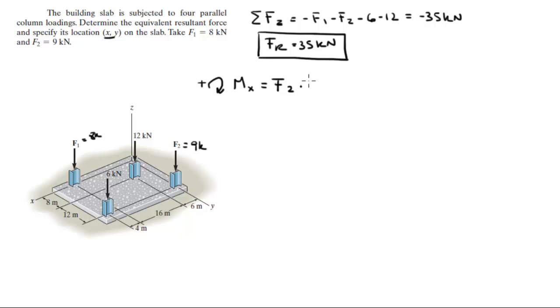So, F2 times 20. That's the moment that F2 is creating. Times this distance 20 because it's 8 plus 12. Plus 6 times 20. This is 6 kilonewton force times 20. Plus 12 times 8. That is the moment created about the x. And it comes out to be 396 kilonewton meters.